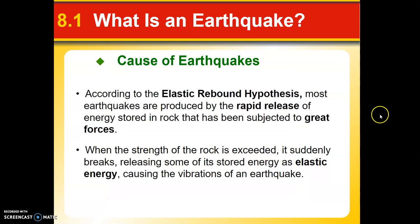So what causes earthquakes? According to the elastic rebound hypothesis, most earthquakes are produced by the rapid release of energy stored in rock because it's been subjected to some kind of great force. This could be pressure built up inside a magma chamber, or the plates pushing up against each other — but when that releases, it's like a rubber band. When the strength of the rock is exceeded, it suddenly breaks, releasing stored energy as elastic energy, and that's what causes those vibrations we call an earthquake.